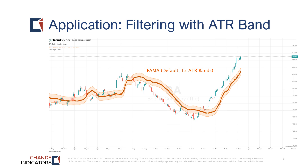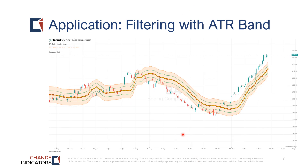Here we have Boeing daily data but we've plotted two sets of bands — 1x and 2x. There are two advantages here again: the breakouts are very easy to see and we can use trend-following strategies, and during a wide trading range we can use the bands to set up counter-trend strategies.